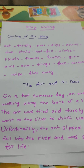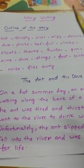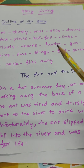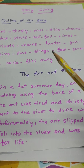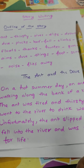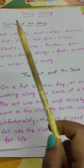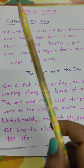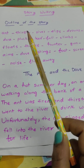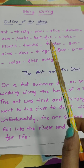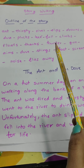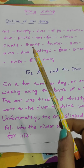Welcome back to English online class. Today we will do story writing. Watch the video carefully. At the end of this lesson, you will learn how to write a story based on a given outline. First, let's read the outline of the story: ant, thirsty, river, slips, drowns, dove, plucks, leaf, fall, climbs, floats, fangs, hunter, gun, aims.